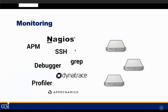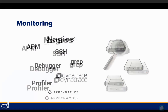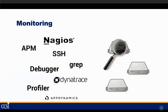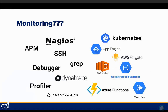Traditional monitoring was designed to monitor a server. You had things like Nagios, or maybe you just SSH'd into the box to take a look, or you used something like AppDynamics — to look at either a specific bare-metal server or a virtual machine. You had an agent or you remoted into the machine, looked at what was going on inside, checked it against a threshold, and alerted if the threshold was violated.